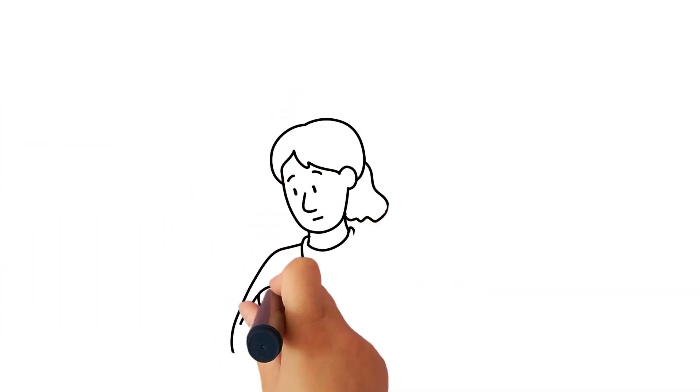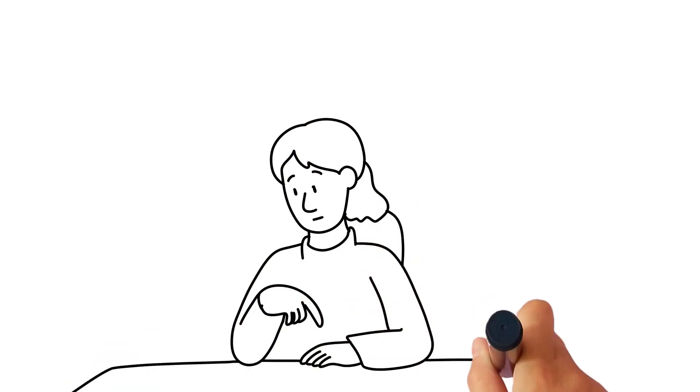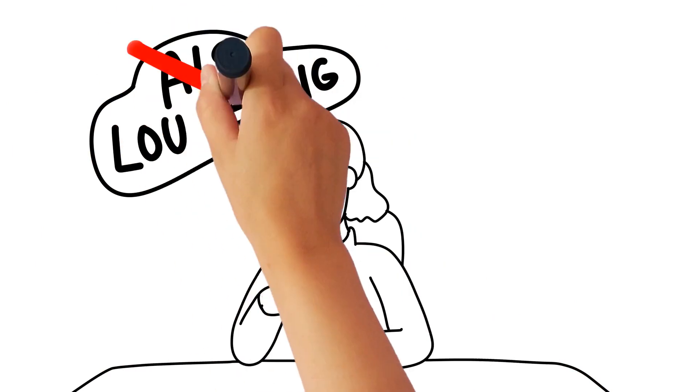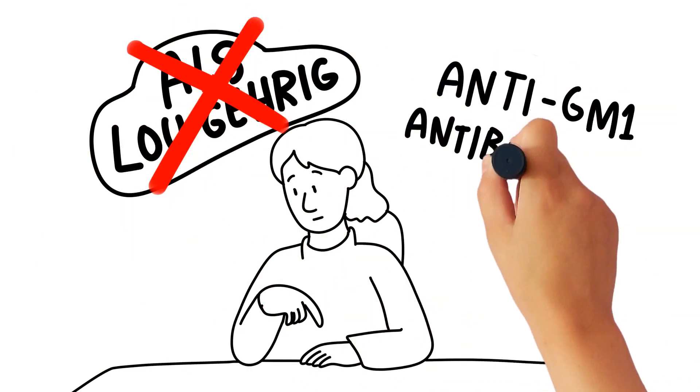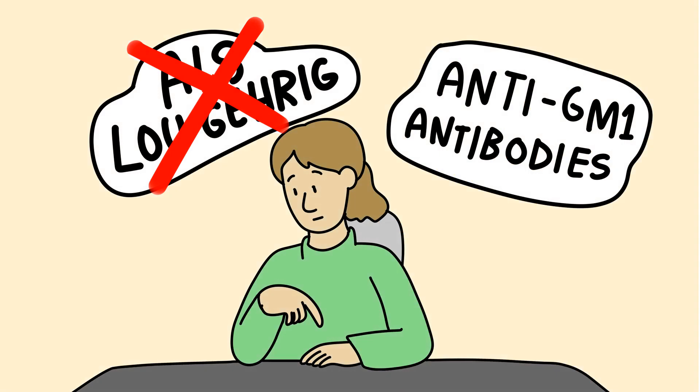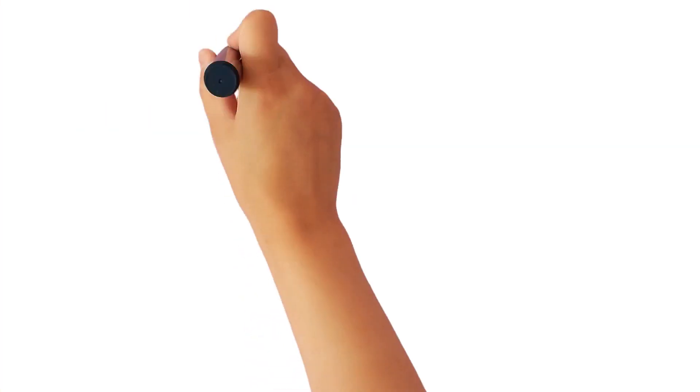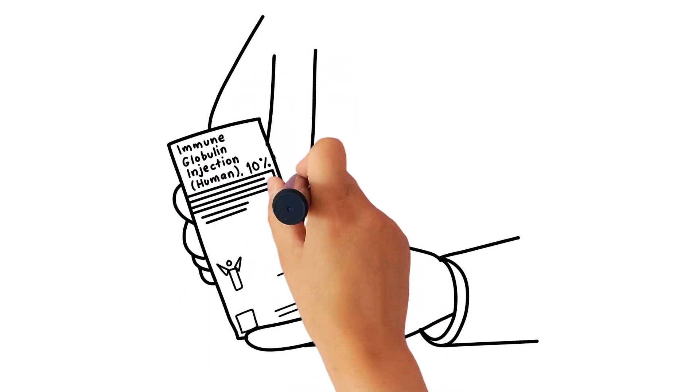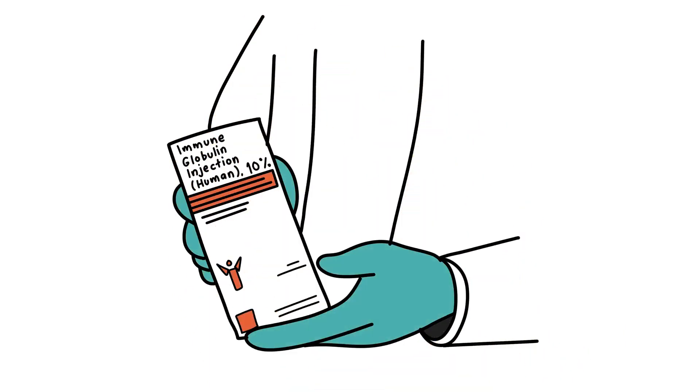MMN can be very difficult to diagnose. Patients are often suspected initially as having ALS or Lou Gehrig's disease. Patients with MMN may have anti-GM1 antibodies, up to 80% of patients. The only approved treatment for MMN is immunoglobulins, which can be given intravenously or subcutaneously.